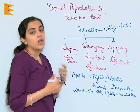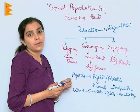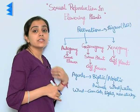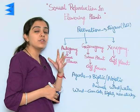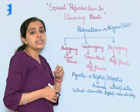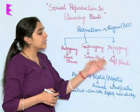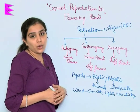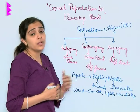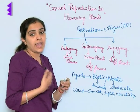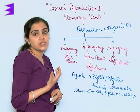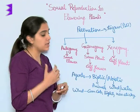Then there is Xenogamy. In Xenogamy, altogether a different plant is involved — that is, the pollens of a distantly located plant reach another plant. This leads to cross pollination and is responsible for various genetic character modifications and genetic changes that we see around us.